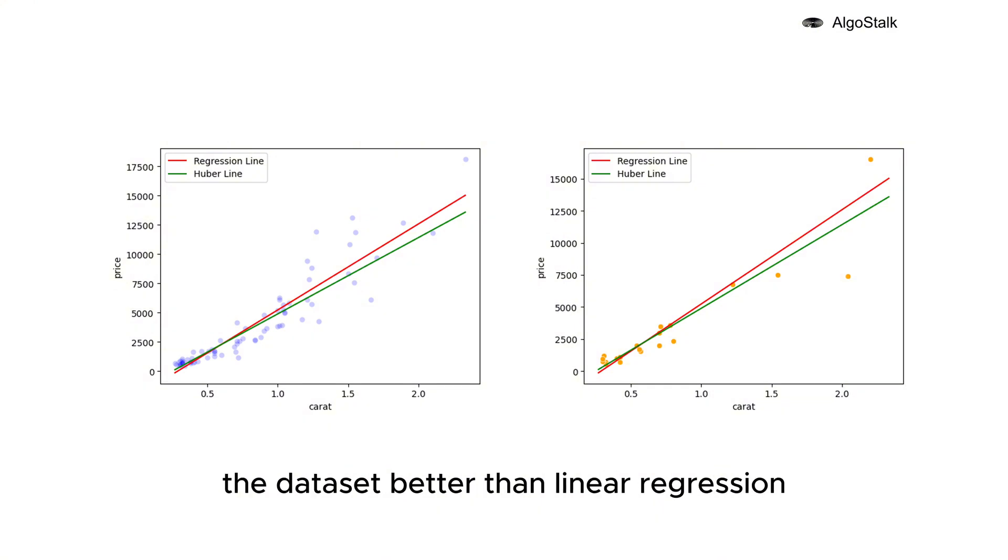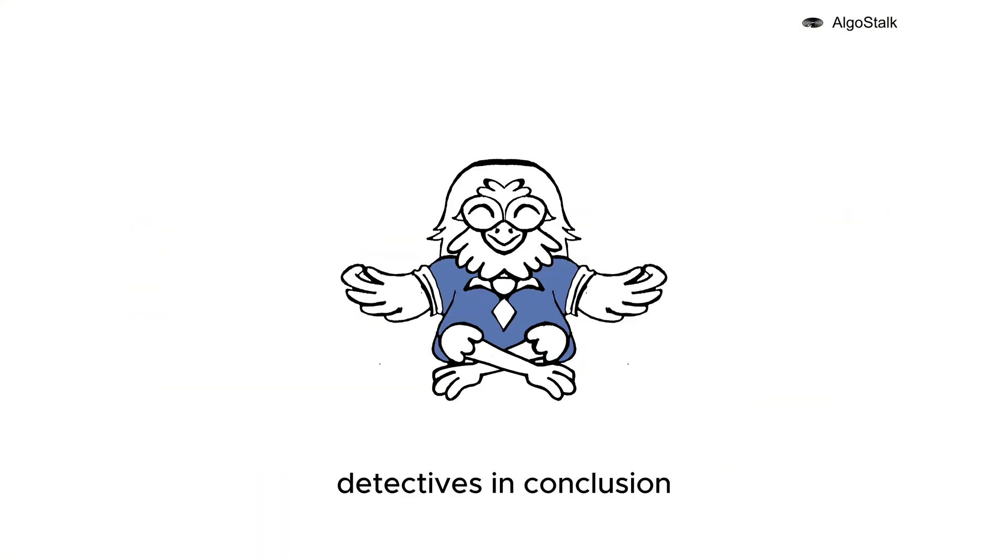Detectives, in conclusion, Huber regression is a powerful tool when dealing with tricky outliers. It strikes a balance between trusting reliable clues and being cautious with suspicious ones. So next time you're dealing with outliers, remember to call in Huber regression to crack the case.